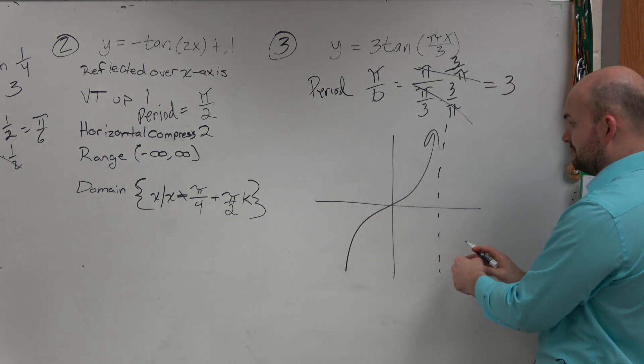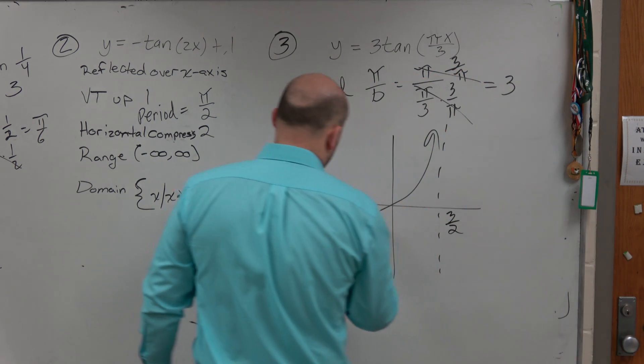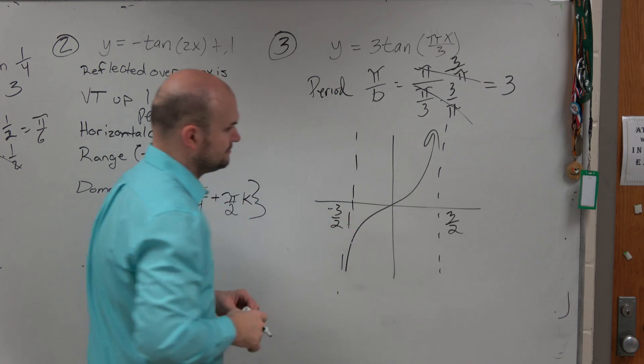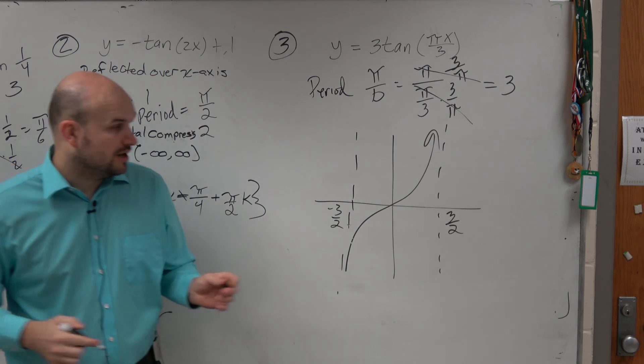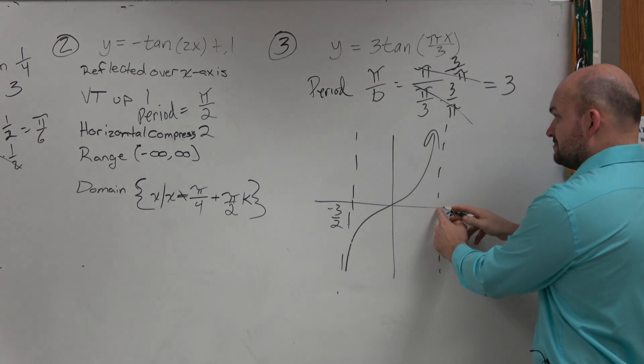You can give me a decimal. 3 divided by 2, which is 3 halves, right? And this one is negative 3 halves. So all we know is the next asymptote is going to occur. How far away from this asymptote?